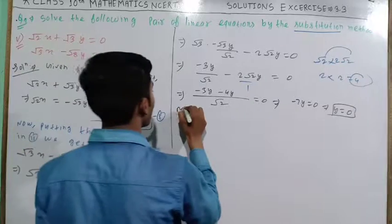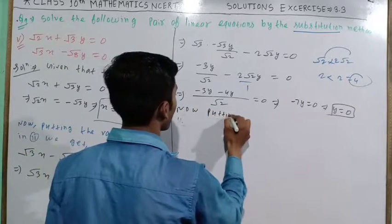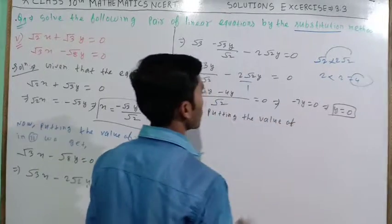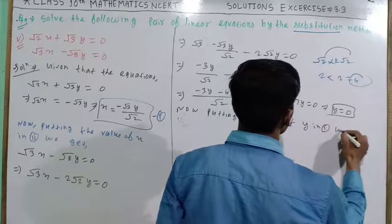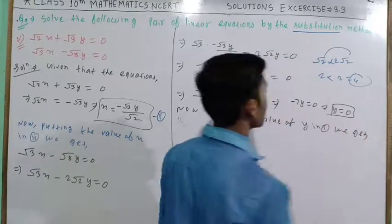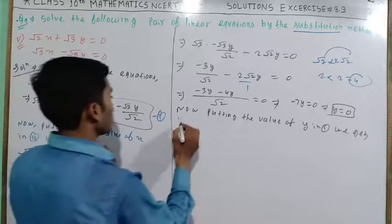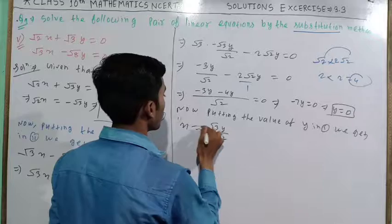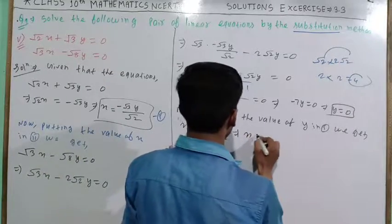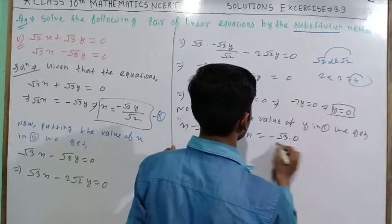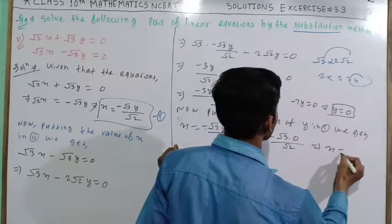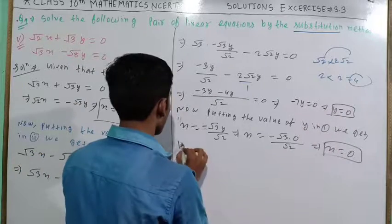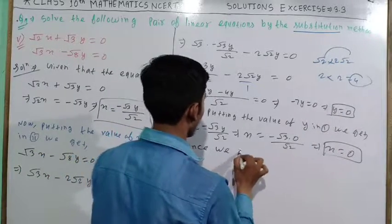Now putting the value of y in the first equation, we get x = -√3y/√2. Since y is 0, it will be x = -√3(0)/√2, which gives x = 0.